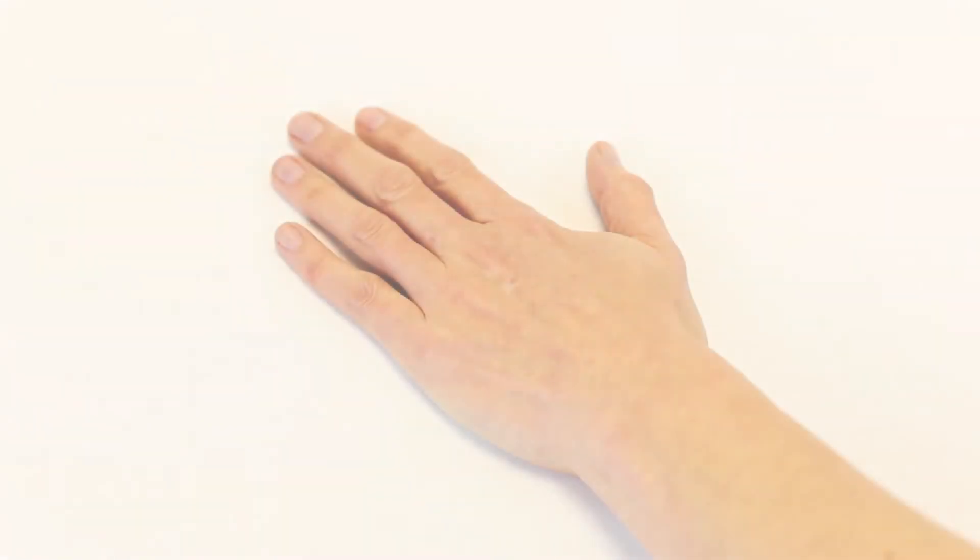To determine which size Sabo stretch you need, just one measurement is required. Ideally, you should place your fingers flat on a table in front of you. If your fingers curl, you can still take the measurement.